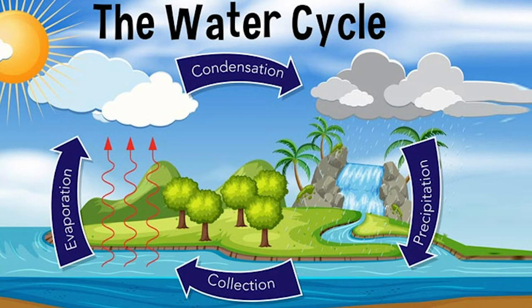Let's also quickly review the water cycle. Remember that water evaporates into the sky during the evaporation process. That evaporation turns into clouds during the condensation stage. The liquid in the clouds falls to the ground during the precipitation stage, and the precipitation is collected by rivers, lakes, the ground, etc.